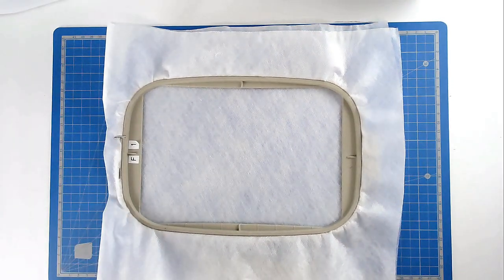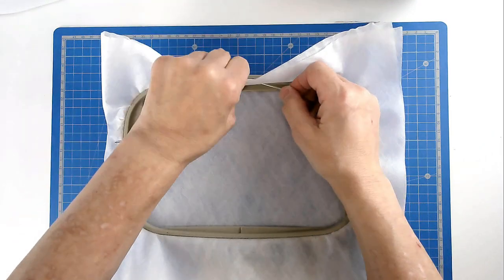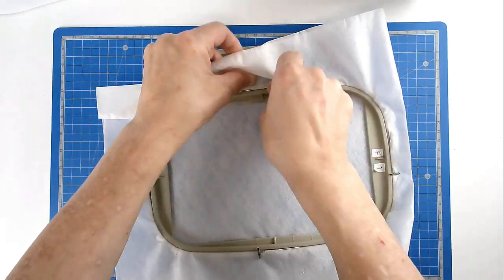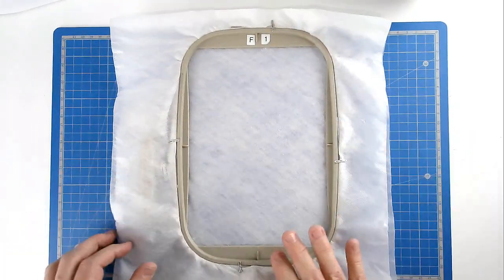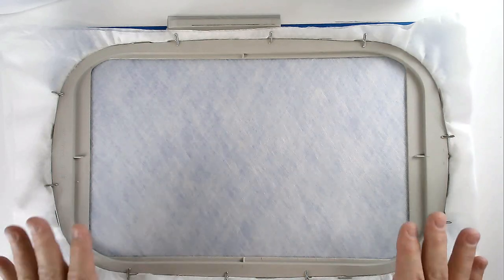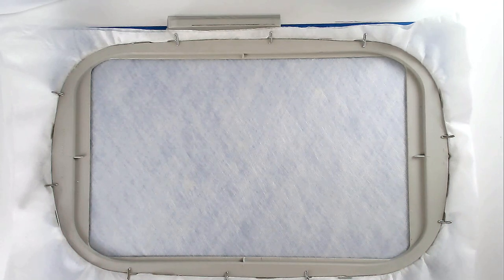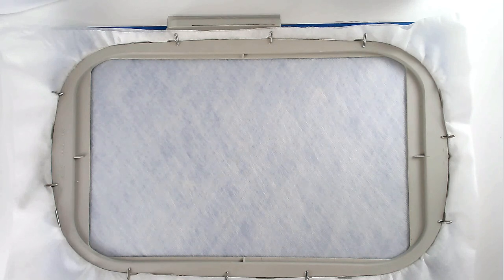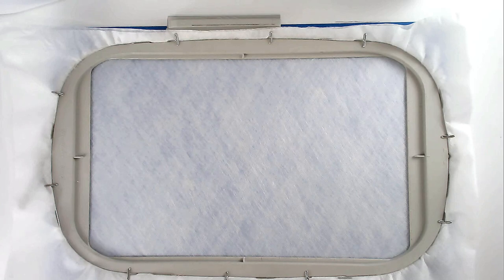The larger your hoop, the more pins you will use. So that's my hoop prepped. Load your chosen file into your machine. I'm doing the 8x8, along with your matching bobbin and thread color, and then you're going to pop your hoop into your machine and stitch round number one, and that's going to give you a placement outline for your fabric.